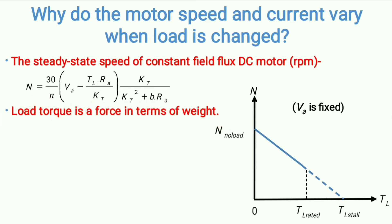Torque is one kind of force specifically for rotational systems. In physics, the term 'force' is used for linear systems, but for rotational systems like motors, we use the equivalent term 'torque.' So torque is force for a rotational system, and weight is also a force — they are different forms of forces that oppose each other. Higher the weight, higher the opposing force, lesser the speed, and higher the current.